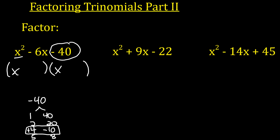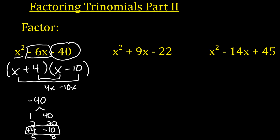Just a quick refresher — when we multiply 4 times x we get 4x, and we multiply x times negative 10 we get negative 10x. When you combine those like terms, you get negative 6x. So the answer is x plus 4 times x minus 10.